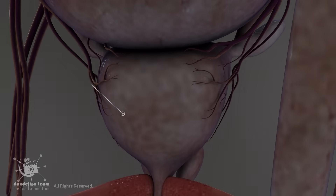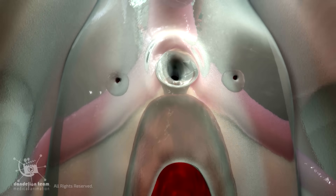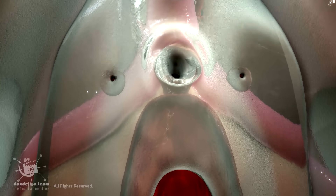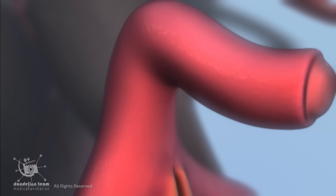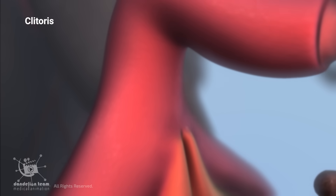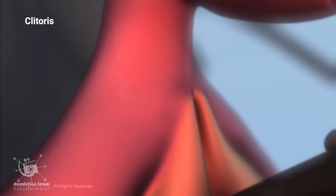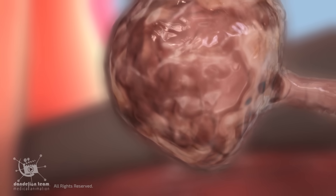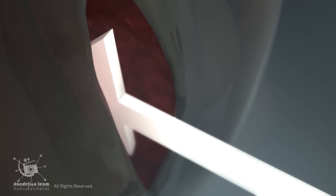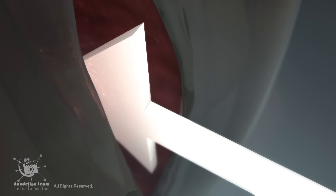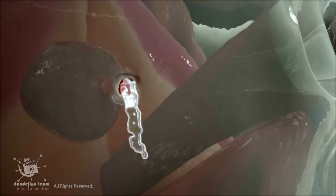Like the male prostate gland, Skeen's glands also play a role in sexual health. When aroused, the tissue around the Skeen's glands and the clitoris become swollen due to increased blood flow to the area. As the Skeen's glands become stimulated, they secrete mucus-containing fluids, which help with lubrication during vaginal intercourse, making sexual intercourse more pleasurable.